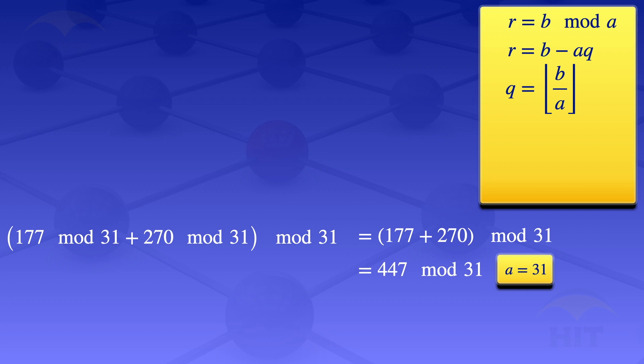Using these values of a and b, we find the quotient as the floor value of 447 divided by 31, which equals 14.